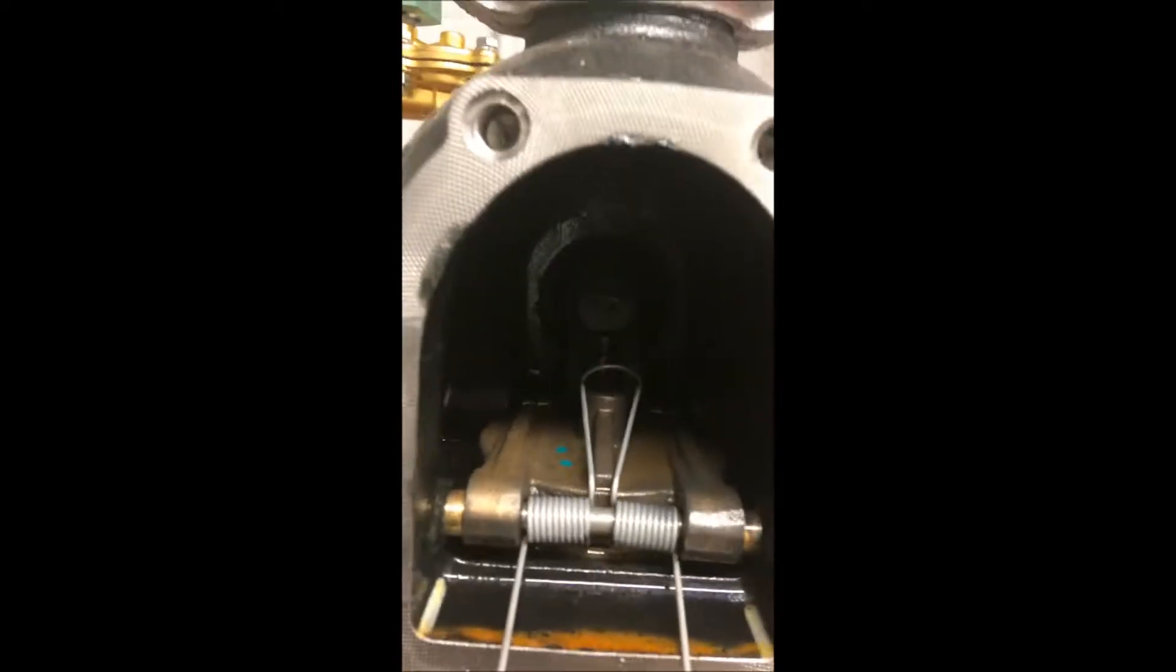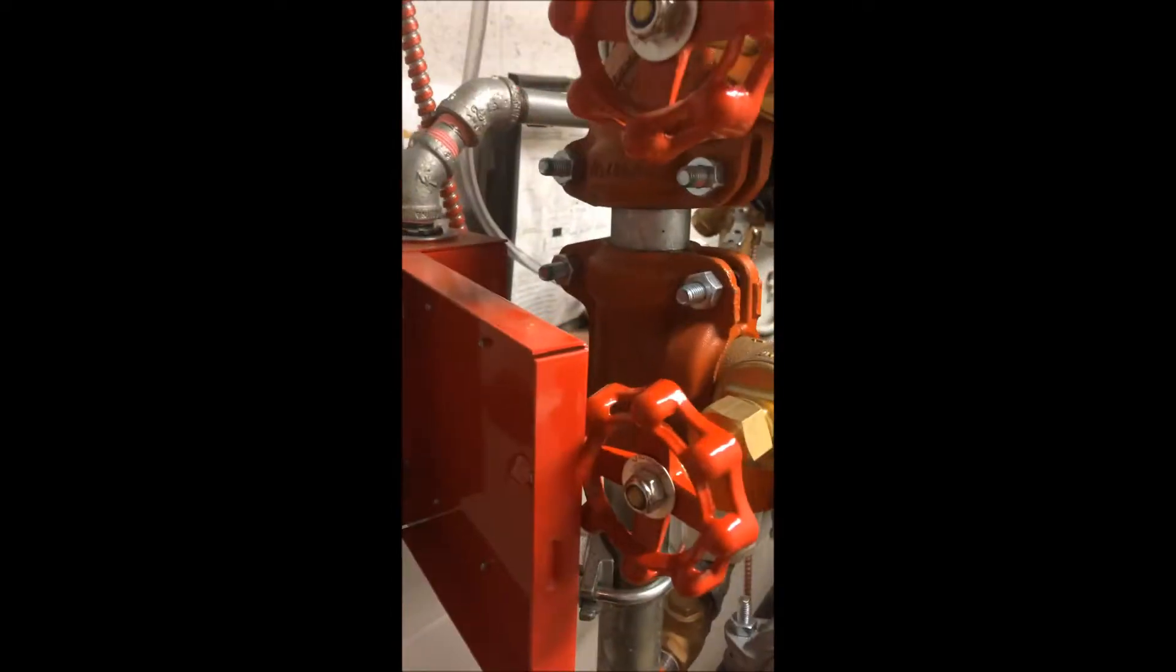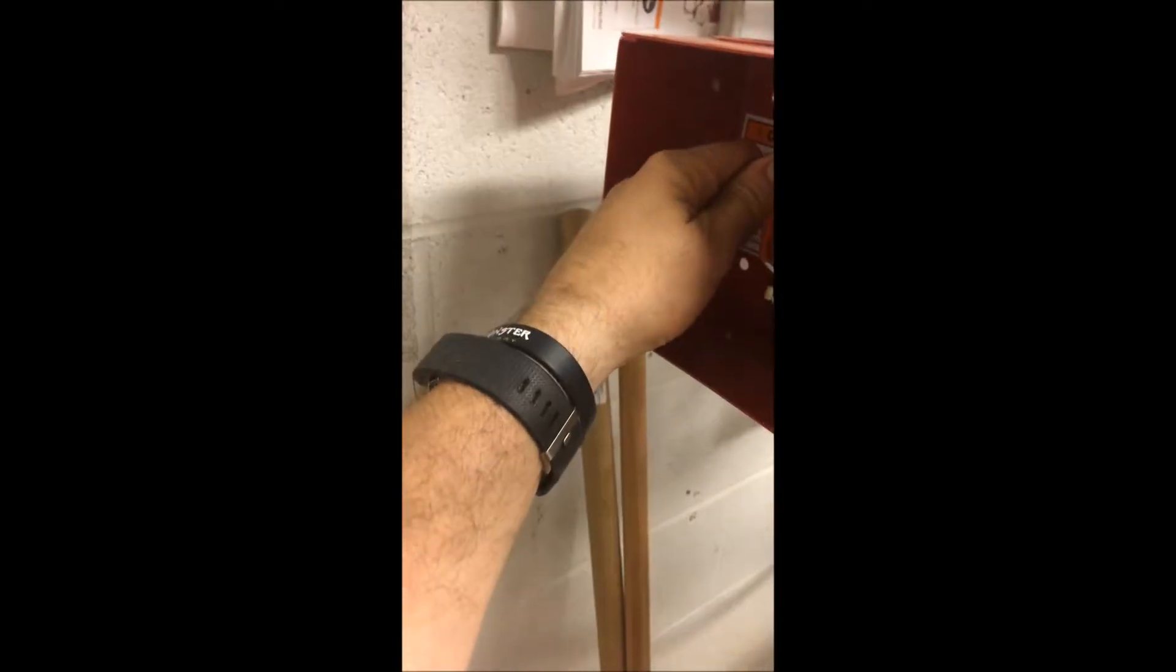Now, the nice thing about the deluge valves is we can actually load this thing with the face plate open. So, let's do that now. First thing we need to do is close off the manual release. That will allow pressure to be built. Now we're going to open up the constant water line.